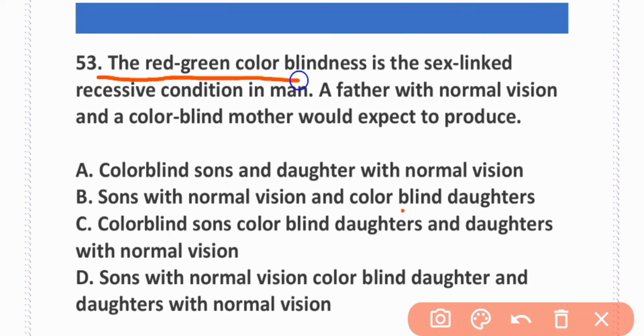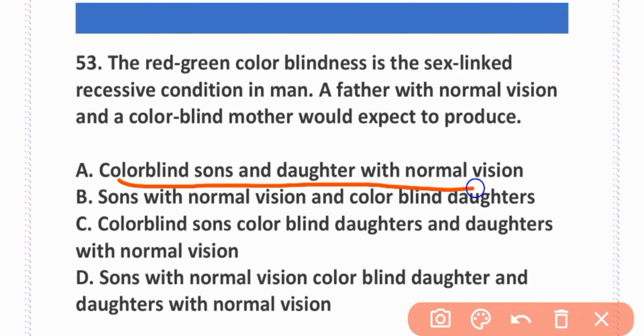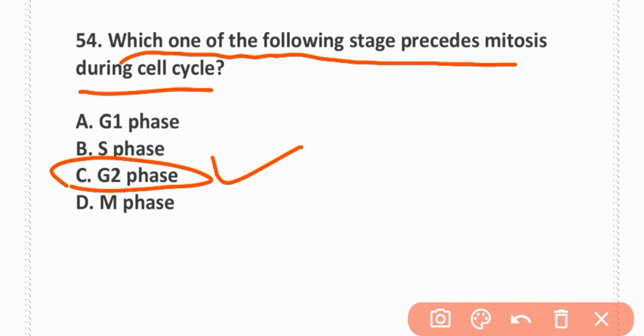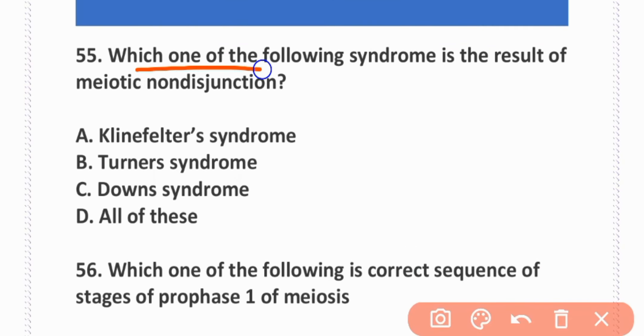The red-green color blindness is a sex-linked recessive condition. A father with normal vision and color-blind mother would be expected to produce color-blind sons and daughters with normal vision. Option A is correct. Which stage precedes mitosis during cell division? G2 phase. Which syndrome is a result of meiotic nondisjunction? All of these.